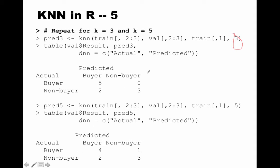So k=3 looks like a good choice. Incidentally, I didn't choose even-numbered values of k because you can end up with a tie — for example, if k=4 and you find two buyer neighbors and two non-buyer neighbors, you can't take a majority vote. With two classes it's a good idea to use odd-numbered k values. If you do choose even k and get a tie, the algorithm just randomly picks a class.